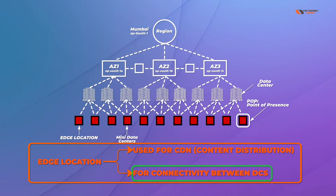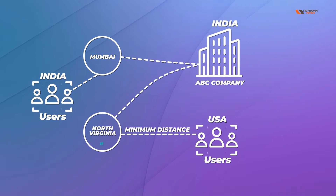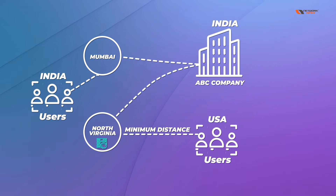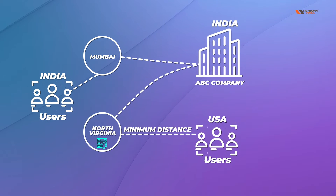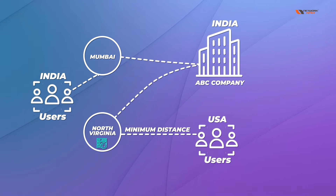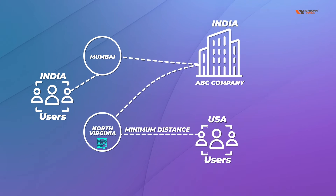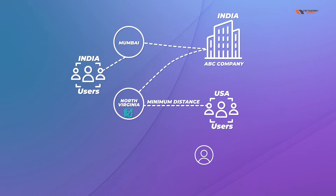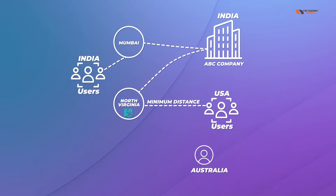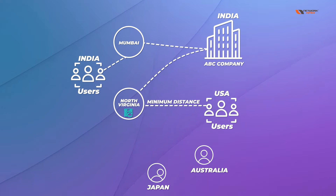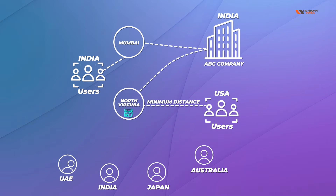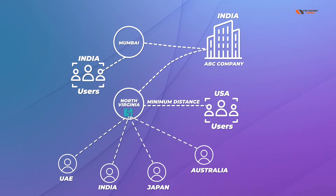Let's say your application and server are running in North Virginia. This web application works great for users in the United States because North Virginia is close to them, so they won't feel any latency. However, the same application is being used by users in different locations — Australia, Japan, India, UAE — and all these users are accessing this application from remote geographic locations.